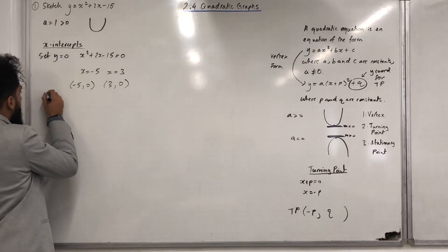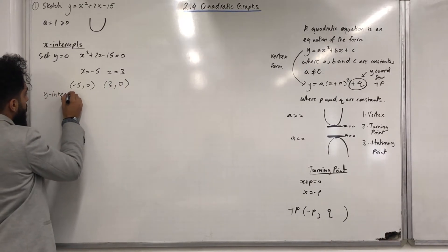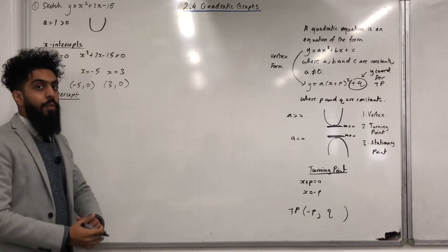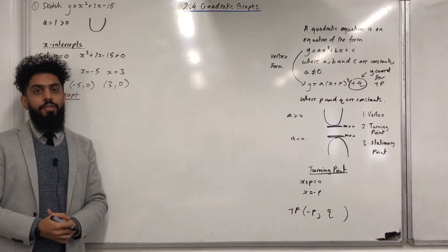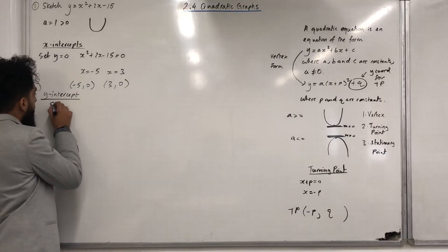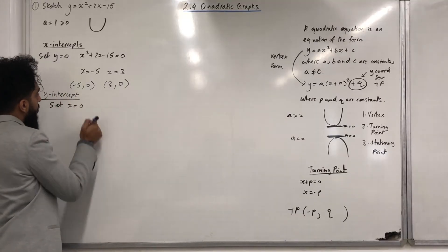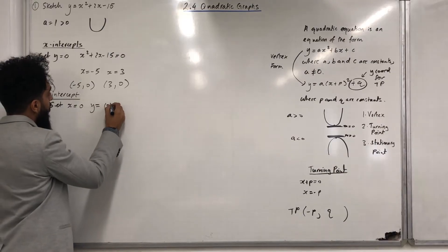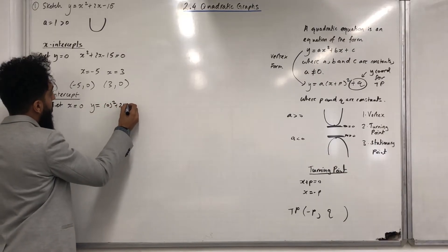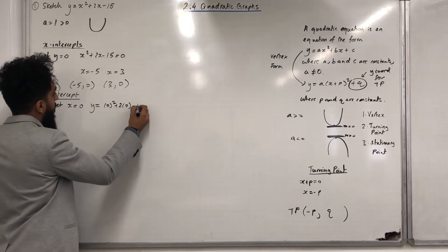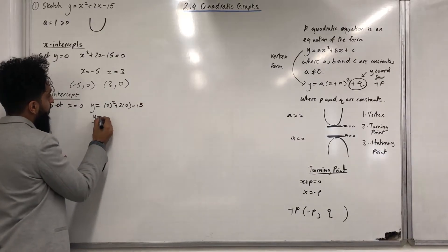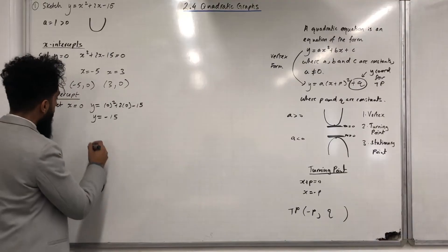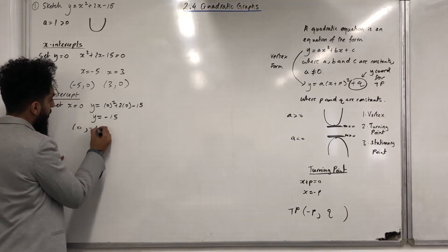To find the y-intercept, I set x = 0. This gives y = 0² + 2(0) − 15, hence y = −15. So the y-intercept is (0, −15).